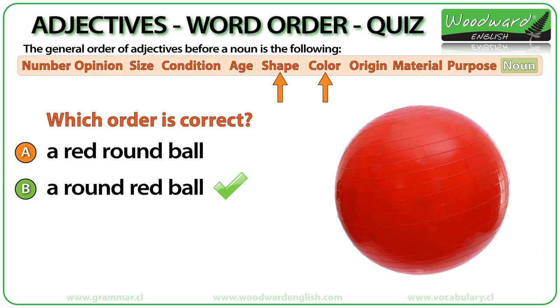A round red ball. Because round is a shape and red is a color, shape comes before color.